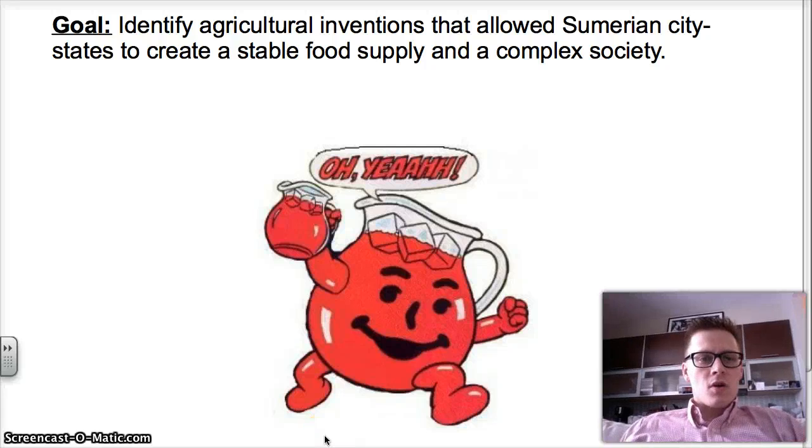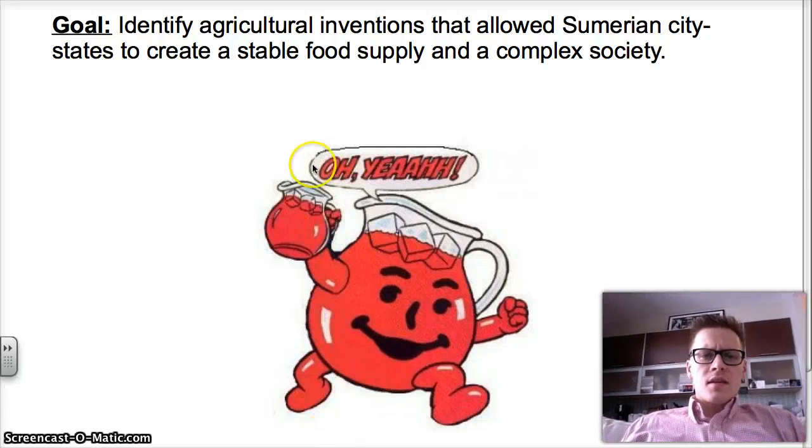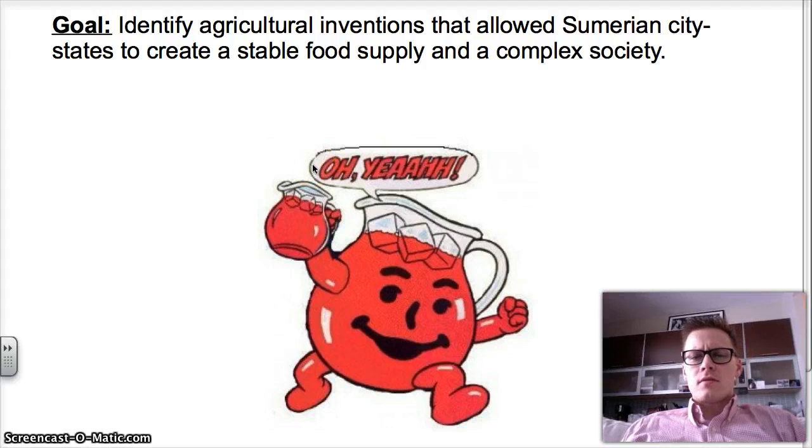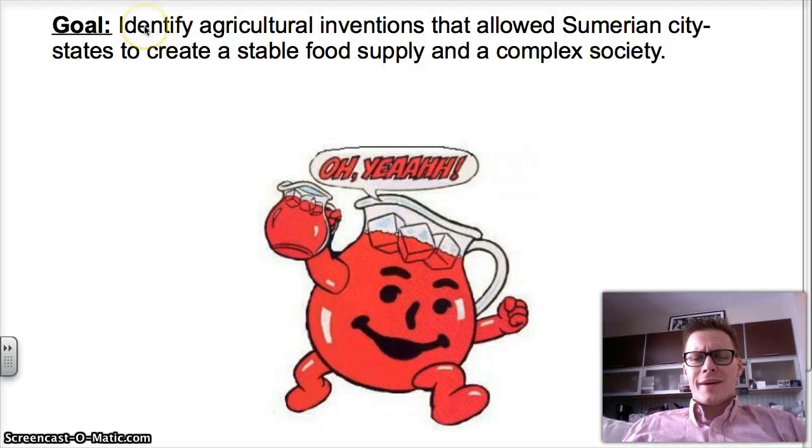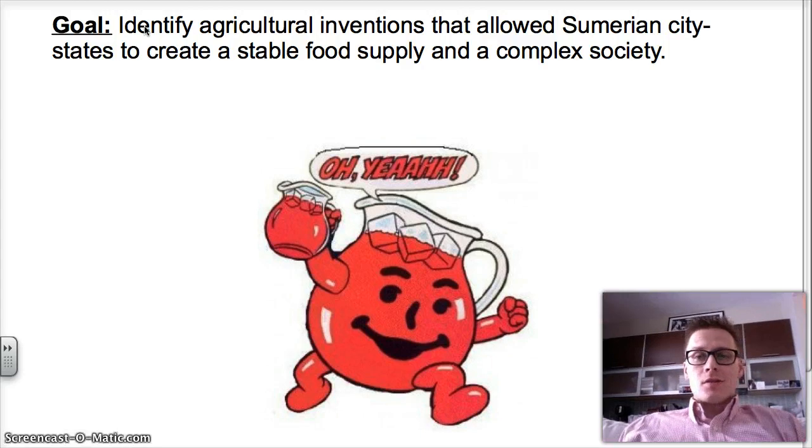Welcome back to World History. I'm Mr. McCall. Today we're going to be discussing agricultural inventions that allowed the Sumerian city-states to create a stable food supply and a complex society. All we're doing is identifying them. So it's really not that challenging. You just need to know these two that I'm going to be discussing.